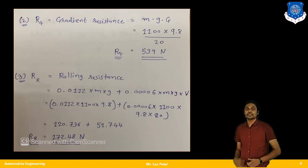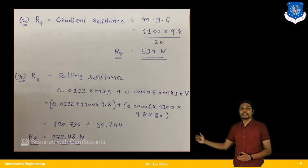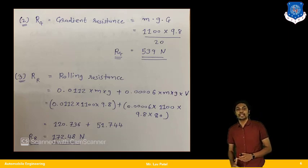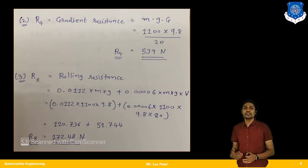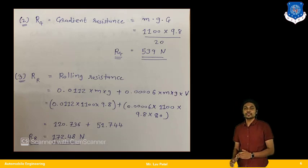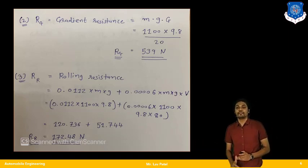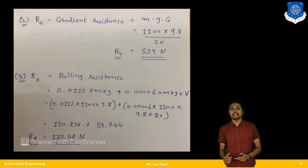The third resistance is rolling resistance Rr, calculated using the equation given in the problem. Substituting M = 1100 kg, g = 9.8, and V = 80 km/h into the rolling resistance equation, we find Rr = 172.48 N.